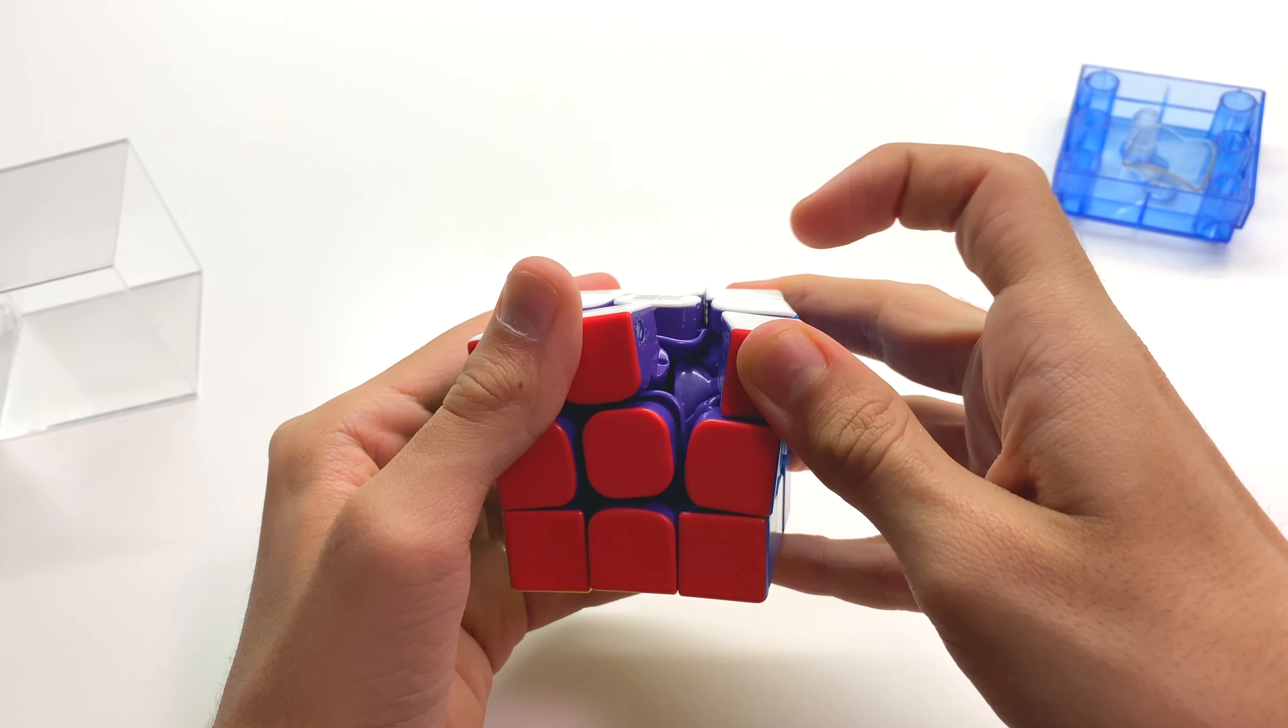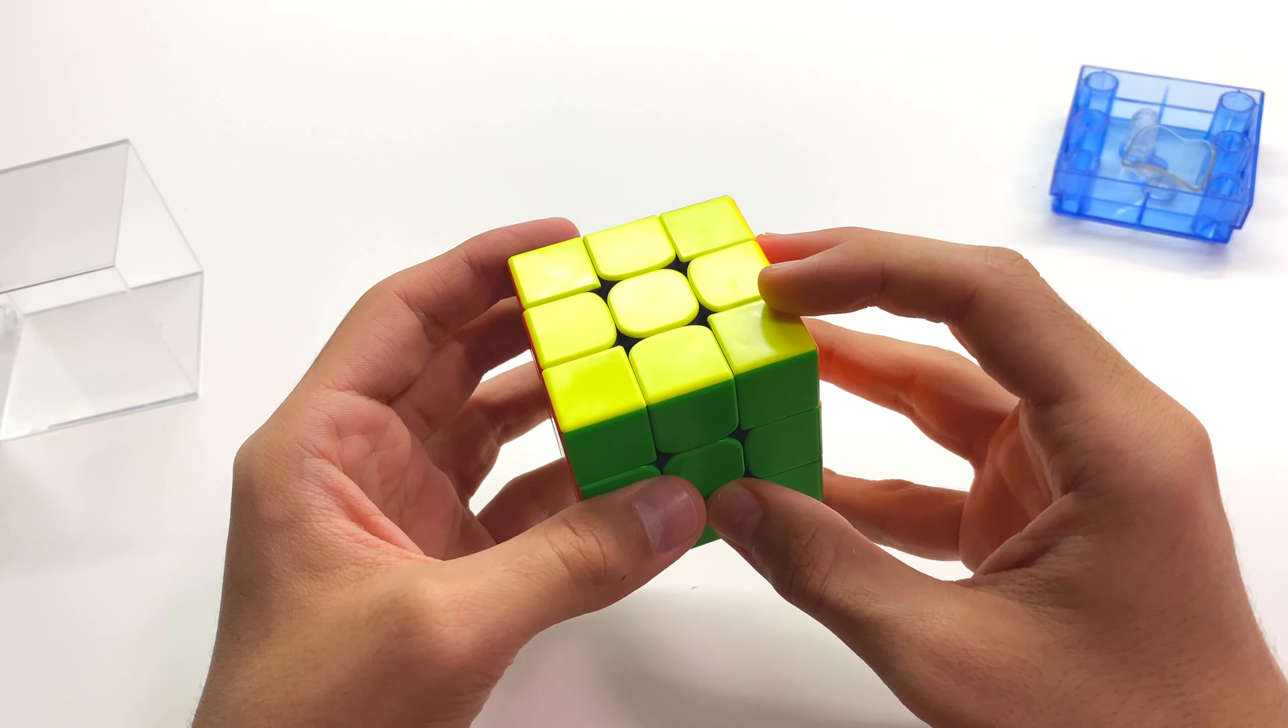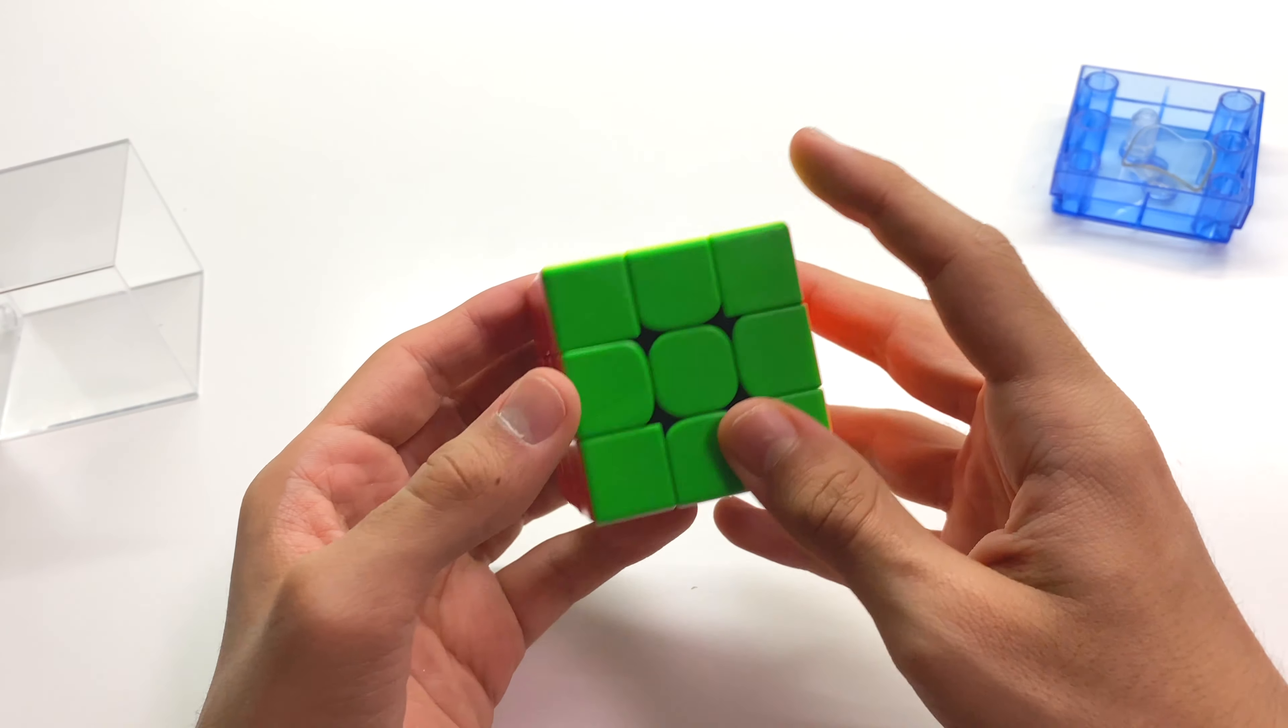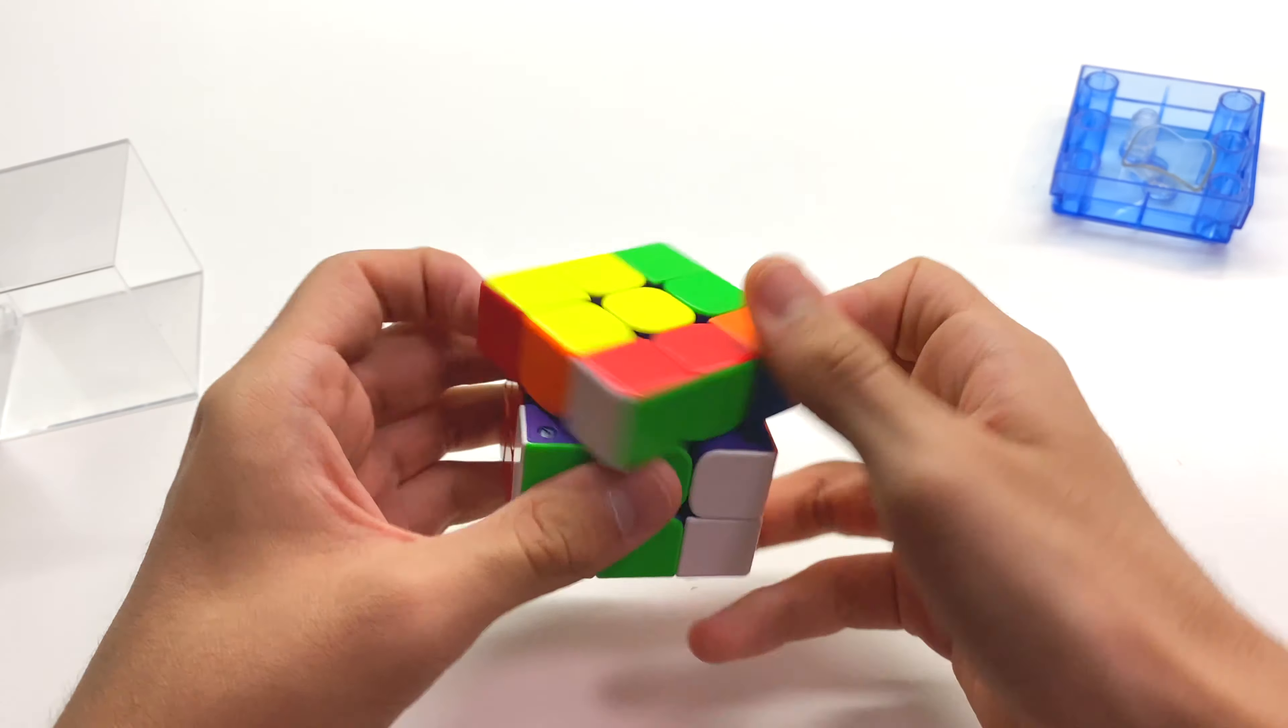Alright, so right off the bat, I'm absolutely loving those purple internals. And the cube seems to have a semi-frosted plastic. It's not exactly glossy, but it's not frosted either. It's somewhere in between. Anyway, let's get into first turns.